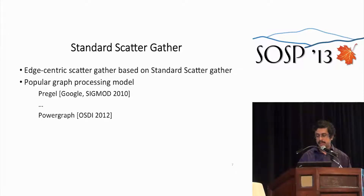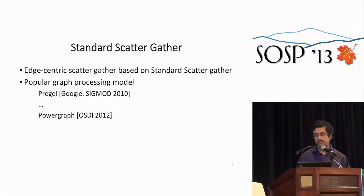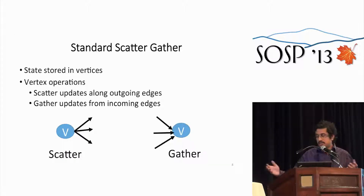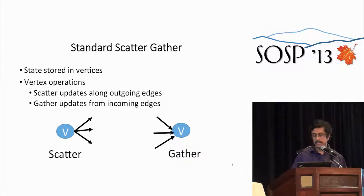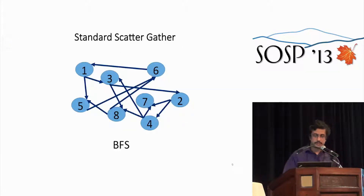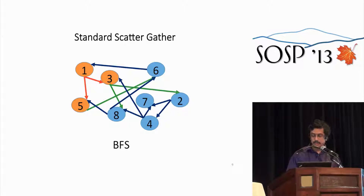The scatter-gather model is well-known, going back from Pregel in 2010 to PowerGraph at OSDI last year. In the standard scatter-gather model, you put state in vertices and have two vertex operations: scatter updates along outgoing edges, or gather updates from incoming edges. In a BFS example starting from vertex one, you scatter updates along edges from vertex one, absorb these in a gather step in vertices three and five, then scatter out again from three and five, and so on until you cover the entire graph.